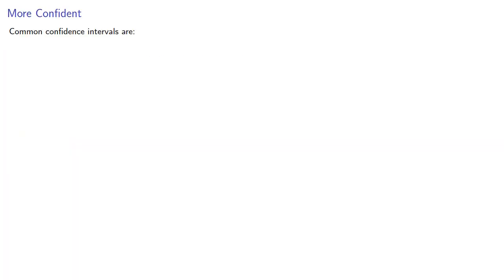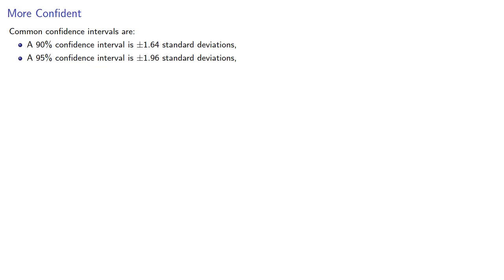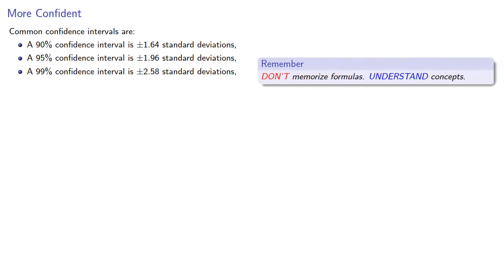We can calculate any confidence interval this way. The common ones are 90%, which is plus or minus 1.64 standard deviations; 95%, which is plus or minus 1.96 standard deviations; and 99%, which is plus or minus 2.58 standard deviations. But don't memorize formulas — understand concepts. In general, the c% confidence interval is the interval where c% of the values reside.